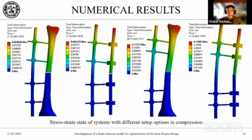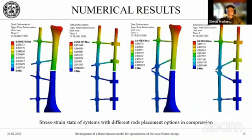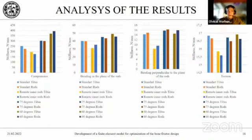Moving on to the second part of the problem: the comparison of the system with the real bone model and the simplified model with the rods. For the rods system, we perform similar actions — setting material properties, creating a finite element mesh, setting boundary conditions, and performing calculations. After receiving the calculation results, we compare the stiffness of the systems. We can conclude that for approximate calculations it is possible to use the simplified rods model, since the error does not exceed 10%, while the number of nodes in the tibia model is approximately 1,400,000 compared to approximately 300,000 in the rods model.